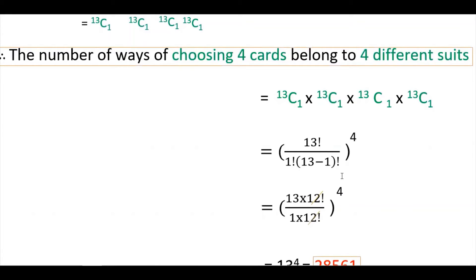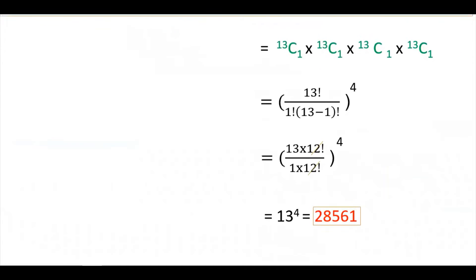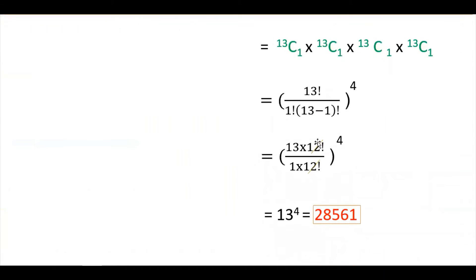13C1 equals 13 factorial divided by 1 factorial into 12 factorial, which simplifies to 13. So 13C1 to the power of 4 equals 13 to the power of 4, which is 28,561. You can either leave it in this form or calculate the value.